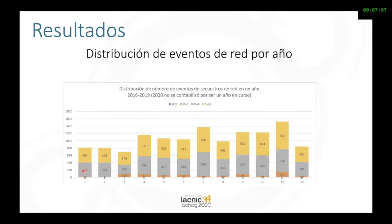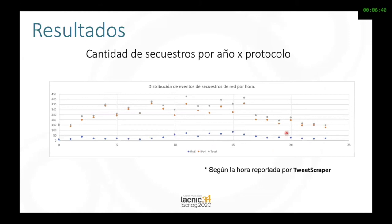Another thing I wanted to show is how our events are distributed. This is from 2016 to 2019, based on the month of the year from January to December. We see that it is in November that we have the largest number of hijacks, followed by July. So next month we should be paying close attention. If you don't have RPKI and IRR, pay attention to this. We also looked at the times of the day, from midnight to 11 p.m.